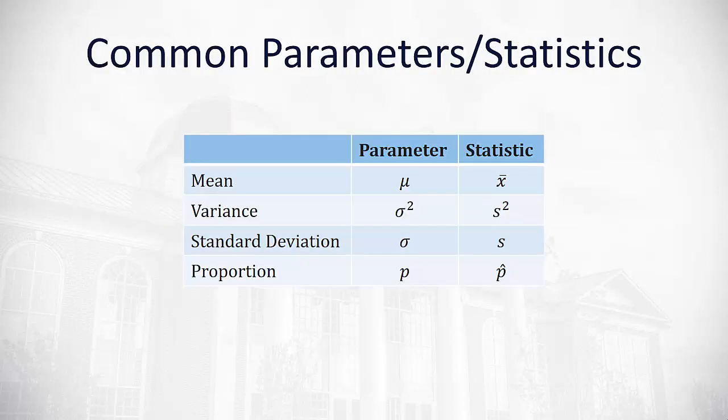To help us distinguish between parameters and statistics, we use different symbols for each one. Parameters we'll often use Greek letters for. For the mean, we'll use the Greek letter mu. For the variance, the Greek sigma squared. The standard deviation sigma. And with proportions, we'll often use p.